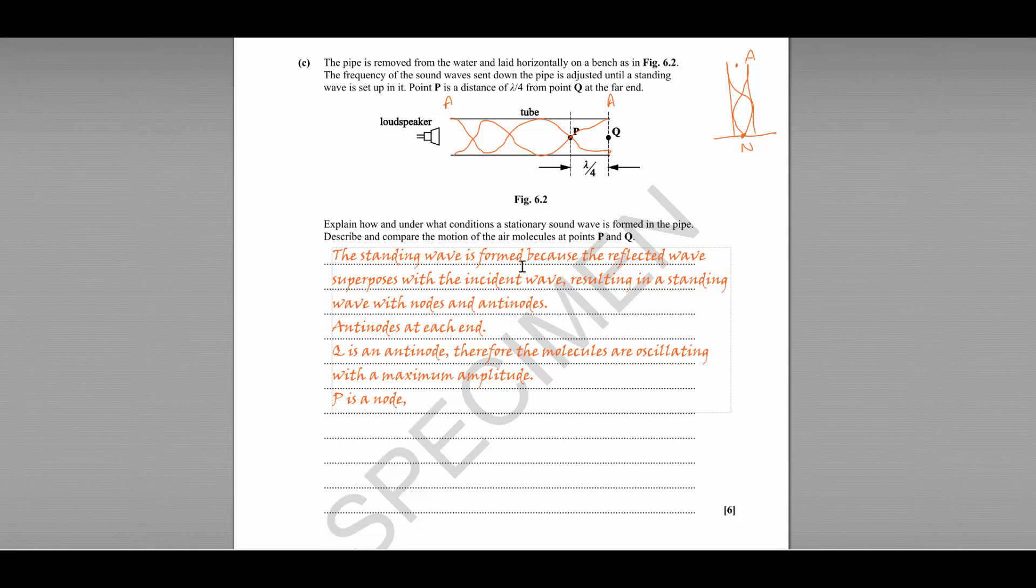So if P is a node, that means that the molecules are not oscillating. The air is stationary at P.